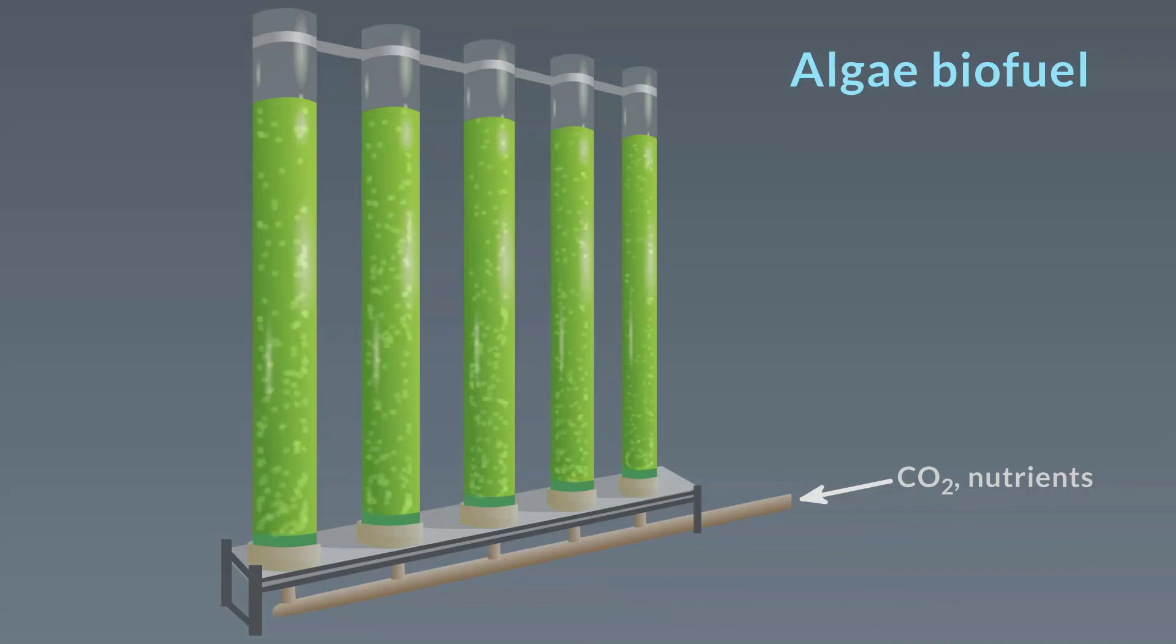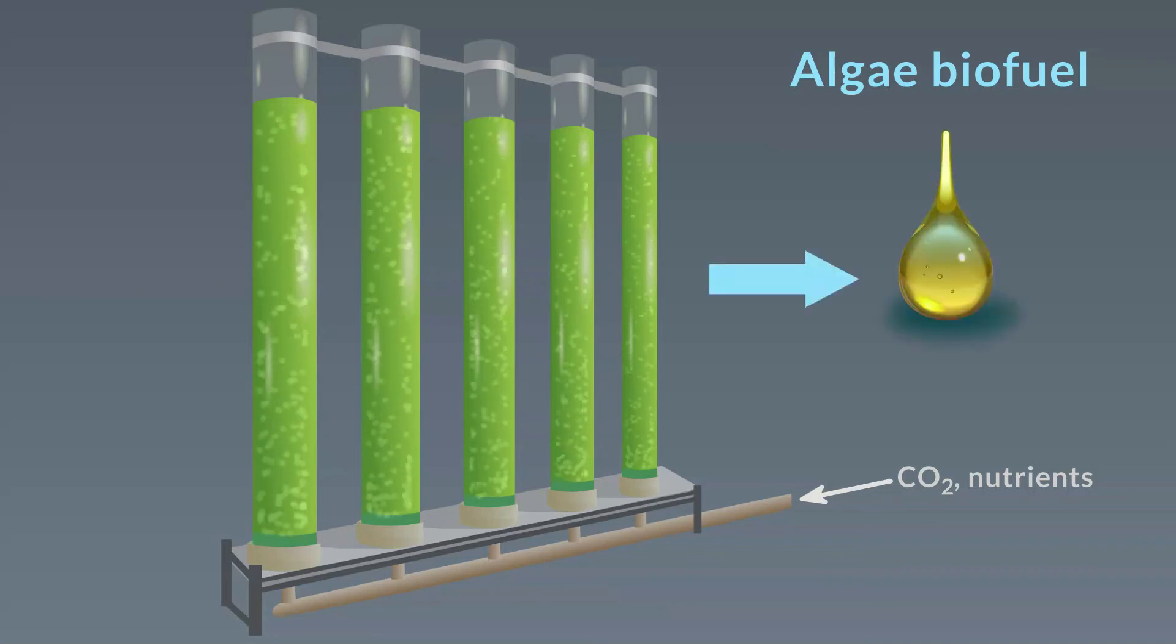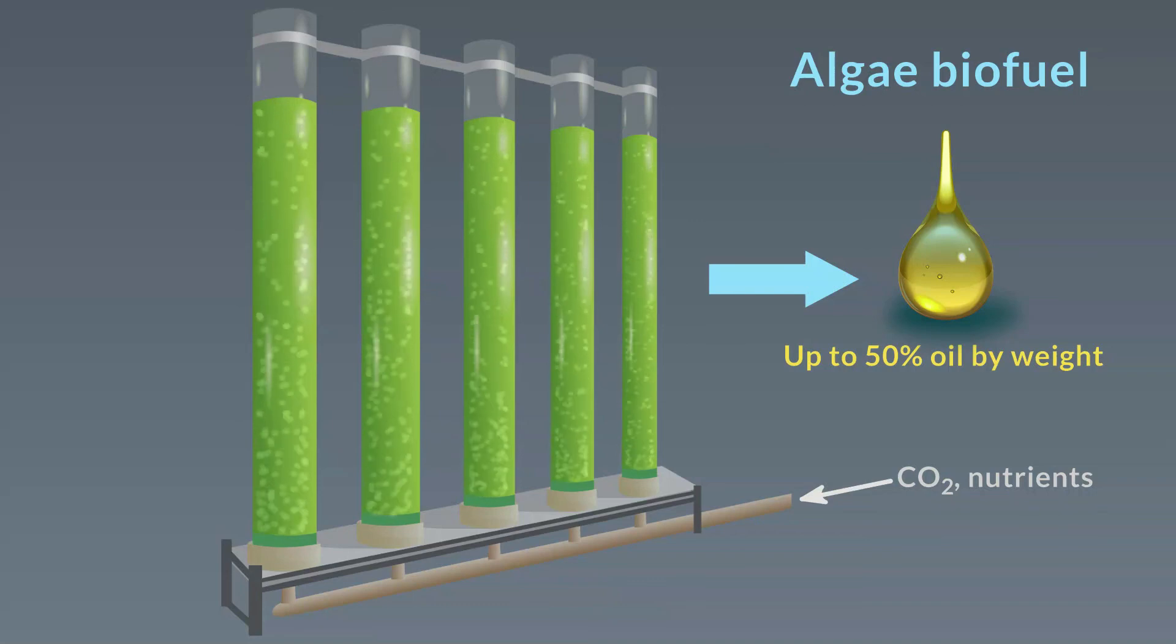The microalgae cell walls must be broken down with sonication, the oil extracted and then refined into fuel. These organisms can produce oil up to 50% of their dry weight. This approach is much more land efficient than conventional biomass production and uses 10 times less water.